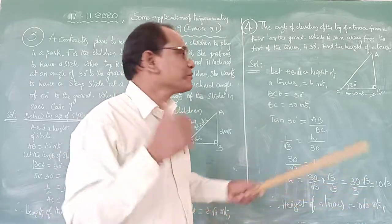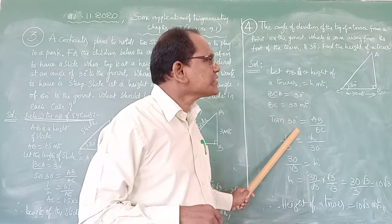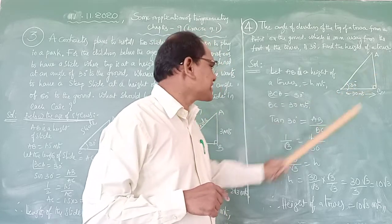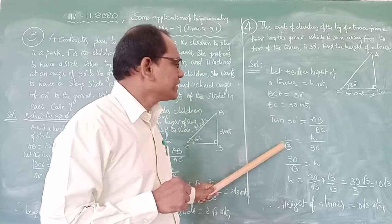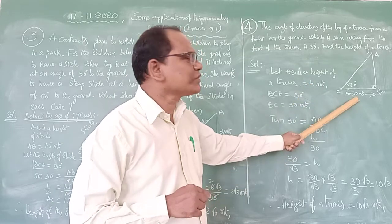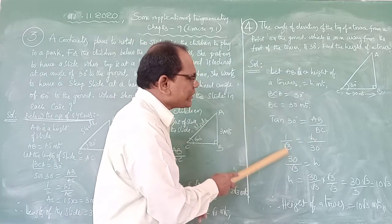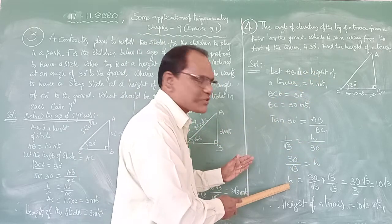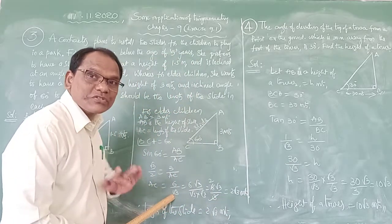Tan 30 degrees from the table equals 1/√3. Therefore 1/√3 = h/30. By cross multiplication, h = 30/√3. Now √3 is an irrational number, so we should not leave the answer in this form — we need to rationalize.